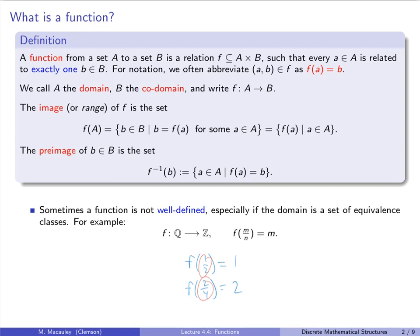More formally, well-defined means: if a₁ is equivalent to a₂, then it better be the case that F(a₁) = F(a₂). In this example, 1/2 is equivalent to 2/4 — recall how we defined the rational numbers in a prior lecture as equivalence classes on ordered pairs of integers. In that case these are equivalent, and they must get mapped to the same place in the codomain.